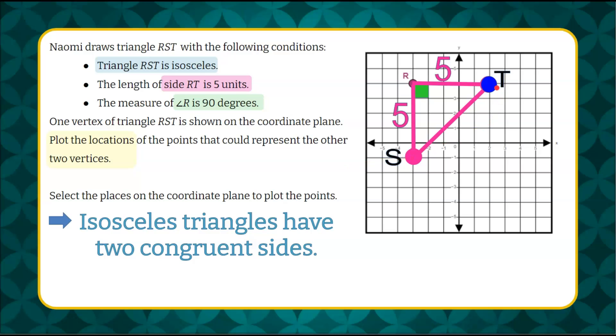So let's review. T, your location for T should be at the point (2, 4), and you should have plotted S, or this could have been T. T and S are interchangeable. The other point should be at (-3, -1).